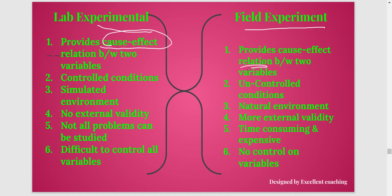A lab experiment is done in a lab where the researcher can control many things, so it is done in a very controlled condition where many variables can be controlled and manipulated. A field experiment, as the name suggests, is where the researcher goes into the field and tries to do the experiment in the natural settings of the participants or subjects involved.